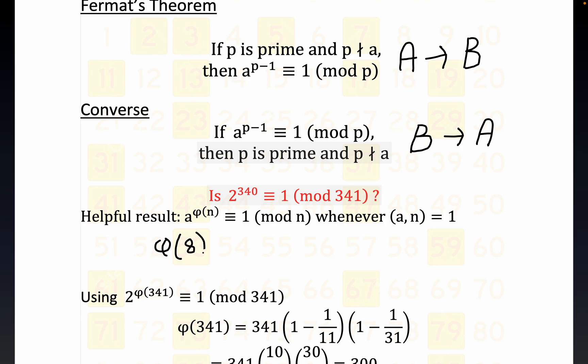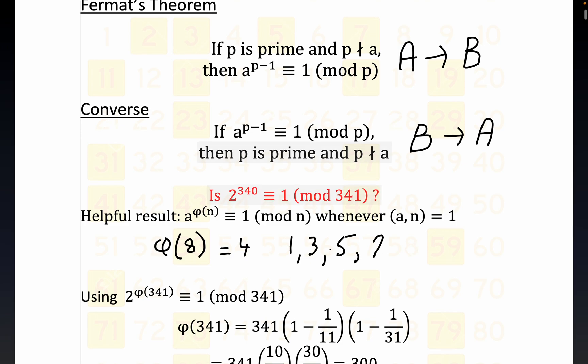Let's do the totient function of 8. The totient function of 8 - I'm just picking that because it's an easy number to calculate - is equal to 4, since 1, 3, 5, and 7 are relatively prime or coprime.